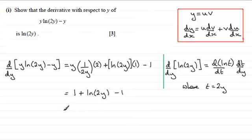And you can see that the ones cancel just giving us 0 and leaving us with the natural log of 2y.